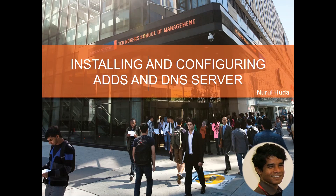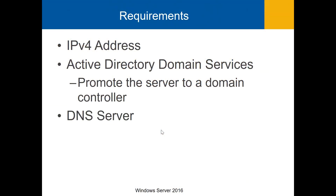In this video I'm going to show you how to install and configure Active Directory domain services and DNS service in a Windows Server 2016 environment. First you need to make sure that the server has been configured with a static IP. Then you can install Active Directory domain services and DNS service. Then you need to promote the server to a domain controller and create a domain. The detail of a DNS server configuration including creation of commonly used records will be shown in another video.